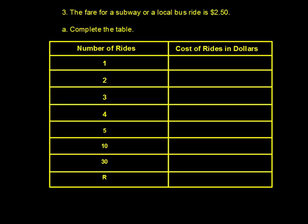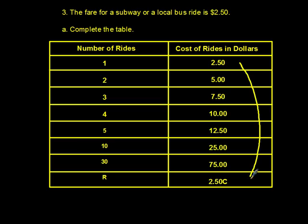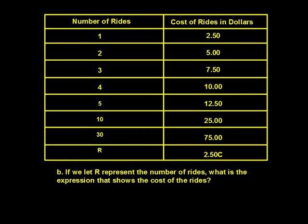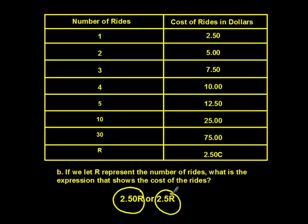Number three — a different problem altogether. The fare for a subway or local bus ride is $2.50. Part A, complete the table — pause and use your calculator if needed. Part B: if we let R represent the number of rides, the expression that shows the cost of the rides is $2.50 times R, or 2.5 times the number of rides, which gives you the total cost.